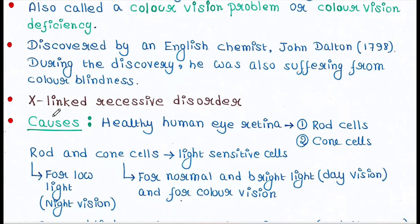Colorblindness is an X-linked recessive disorder, which means the gene responsible for colorblindness is located on the X chromosome.